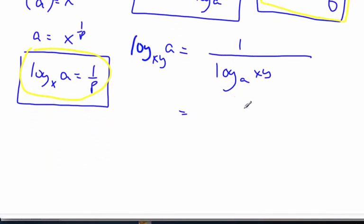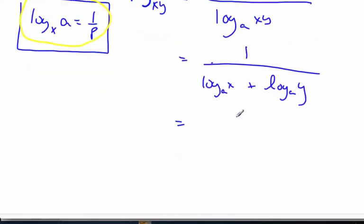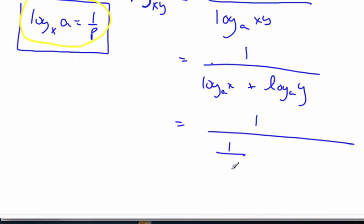Which I know that is going to be 1 over, using my properties, log base a of x plus log base a of y. Now, I have to use base x of a. So again, I'm going to take this scenario. What I can say then is, this is 1 over, switching this around is 1 over log base x of a plus 1 over log base a of y.